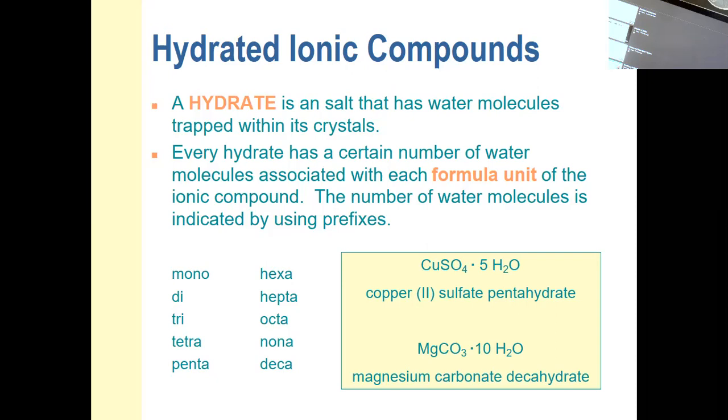So hydrated salts have water trapped within their crystals. If you heat them gently with a Bunsen burner or in an oven or on a hot plate, the water that was trapped inside the crystal escapes. It turns to water vapor and escapes. When it escapes, the salt that's left is referred to as an anhydrous salt, which literally means without water.